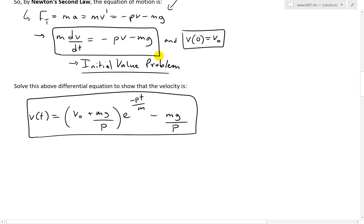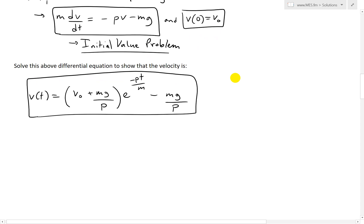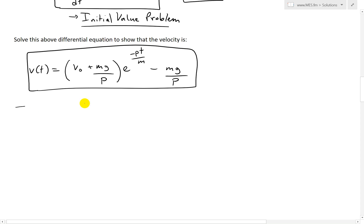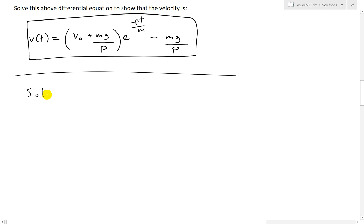That is a differential equation that has both the derivative of velocity and the velocity itself. We also know the initial value: v at time zero equals v₀. This is a simple initial value problem. The question asks us to solve this differential equation to show that the velocity is v(t) equals (v₀ + mg/p) times e to the power of negative pt/m, minus mg/p.